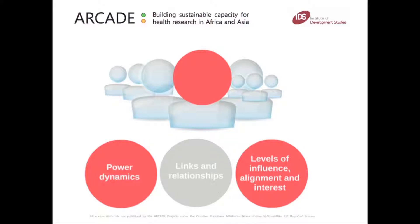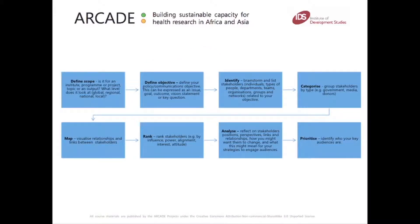There are lots of tools out there that can help you map your audiences, from very simple to much more complex ones. Let's first take a look at some of the stages of stakeholder mapping. The first is to define the scope of the mapping process — is it in relation to your own institution, a particular research programme or a specific research output? You need to define a clear influencing and engagement goal: what change is it that you would like to see? Thirdly, you need to create a long list of stakeholders — individuals such as government officials, organisations such as NGOs. It's useful to brainstorm this in a group.